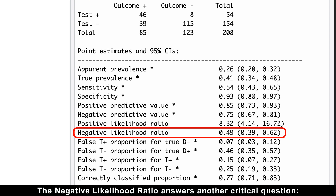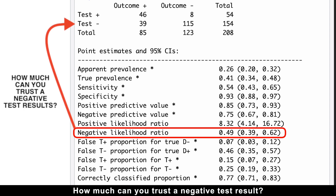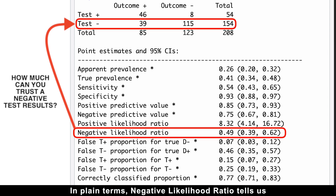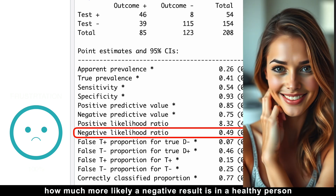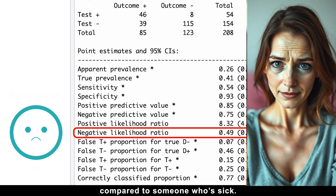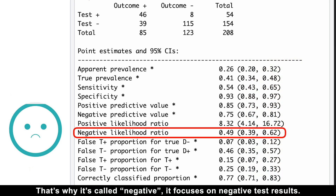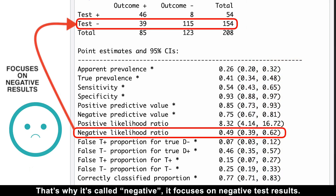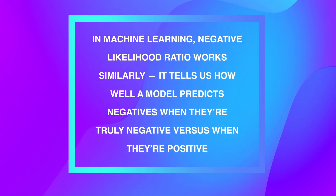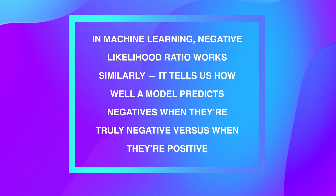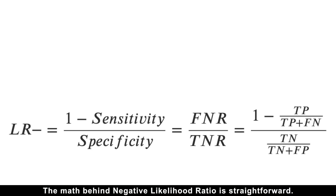The negative likelihood ratio answers another critical question: how much can you trust a negative test result? In plain terms, the negative likelihood ratio tells us how much more likely a negative result is in a healthy person compared to someone who is sick. That's why it's called negative — it focuses on negative test results. In machine learning, the negative likelihood ratio works similarly, telling us how well a model predicts negatives when they are truly negative versus when they are positive.